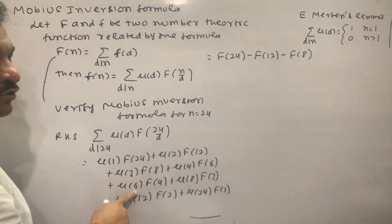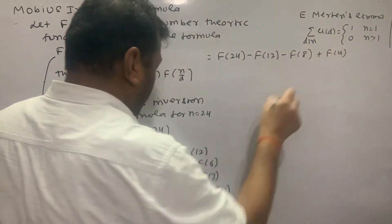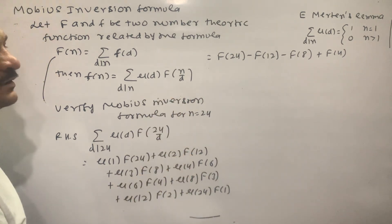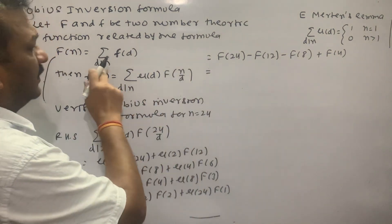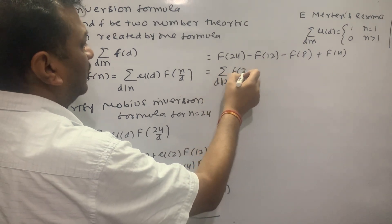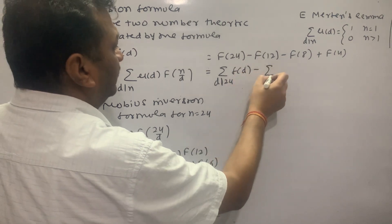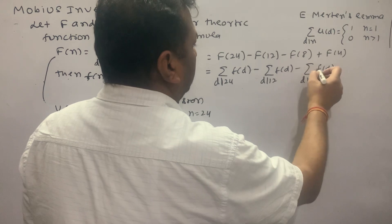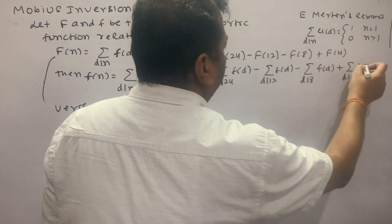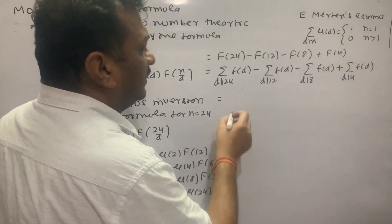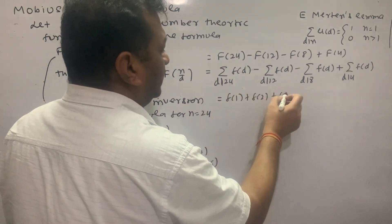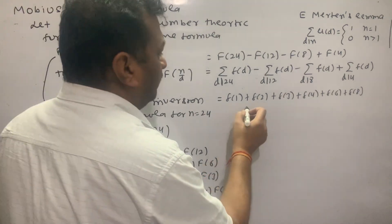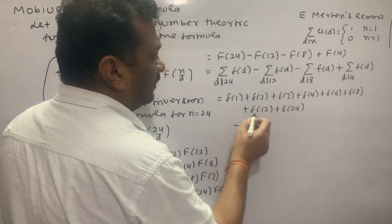Continuing: μ(3) equals minus 1, giving minus F(8). μ(4) equals 0 since 4 = 2² has a squared prime factor. μ(6) equals 1 since 6 = 2×3 has two distinct prime factors, giving plus F(4). μ(8) equals 0, μ(12) equals 0, μ(24) equals 0. So we get: summation d dividing 24 of F(d), minus summation d dividing 12 of F(d), minus summation d dividing 8 of F(d), plus summation d dividing 4 of F(d).